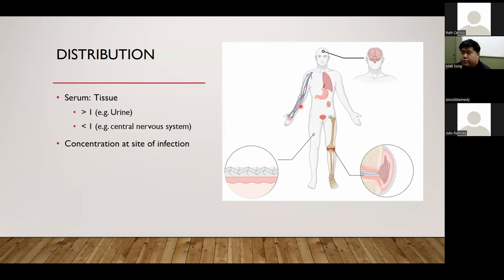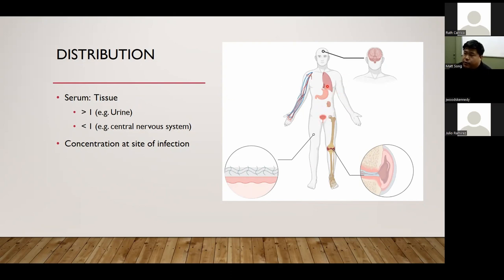When thinking about distribution, we compare the drug concentration in a particular tissue to what's achieved in the serum. For instance, in the urinary tract we often see a far greater concentration ratio than in the serum, because many drugs are renally eliminated and the urinary tract volume is lower than the rest of the body. In contrast, the central nervous system is protected by the blood-brain barrier, which can impede drug distribution into that space, resulting in lower concentrations than achievable in serum.